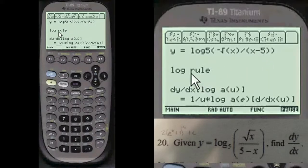And there's a log rule applying here. dy/dx equals log of a(u). This is the base a, and whatever's in here is the u. And here's the formula for the log rule. You write that all on your paper.